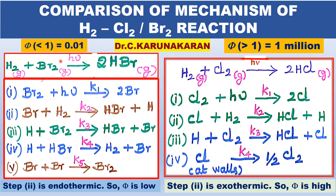Looking at the quantum yield for this photochemical reaction — H₂+Br₂ — the quantum yield is much less than 1, equal to 0.01. Whereas the quantum yield for the H₂+Cl₂ photochemical reaction is very much greater than 1, that is 10⁶ — for one photon of light absorbed, 10⁶ molecules react. That is the definition of quantum yield. Both are chain reactions — please remember, both are chain reactions.